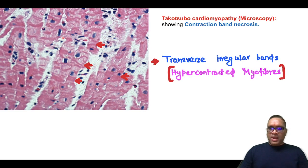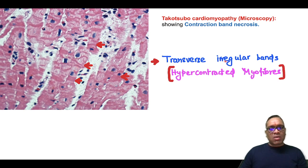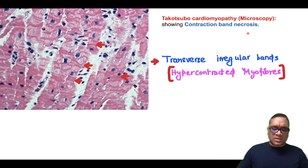Now look at the microscopic finding. You can see wavy, irregular, hypereosinophilic dense bands — these are contraction band necrosis. We can describe them as transverse irregular bands, and these are hypercontracted myocytes or myofibers. That is the contraction band necrosis which will be seen in Takotsubo cardiomyopathy.